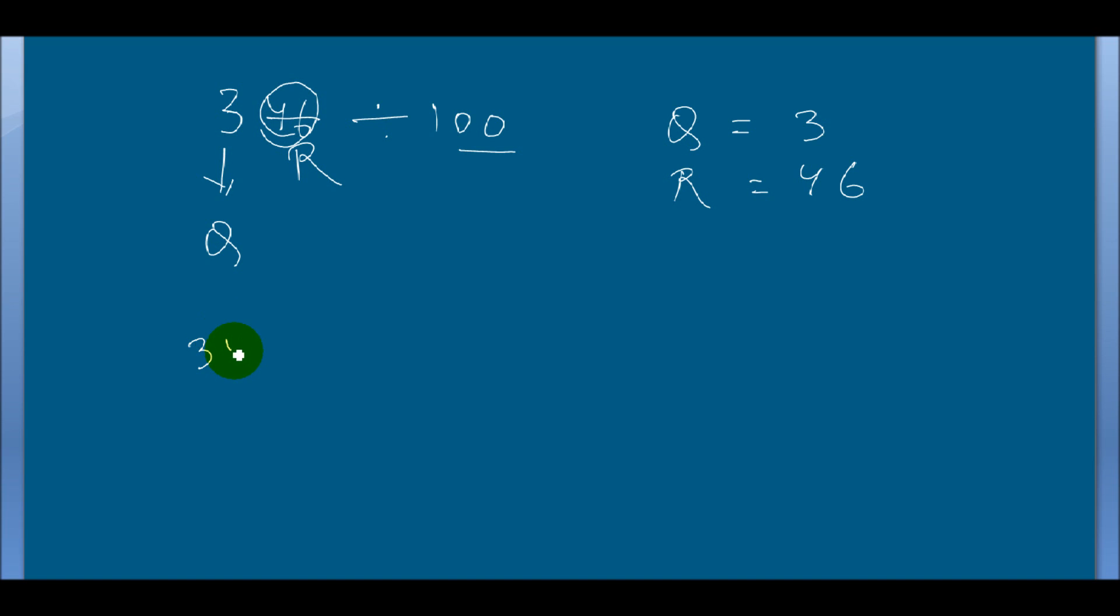See another example. 3462 divided by 1000. So here is 3 digit. From the right side 1, 2, 3. This is the remainder. And this one is the quotient. So quotient equal to 3 and remainder equal to 462. Isn't it easy?